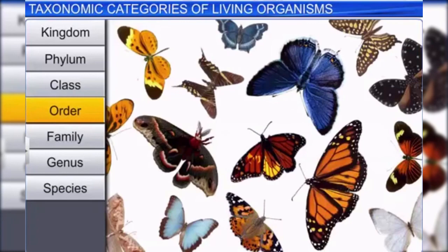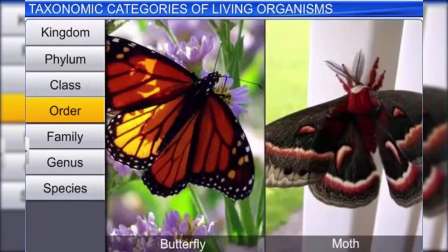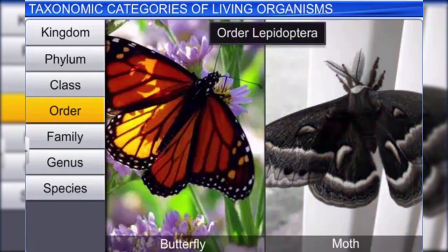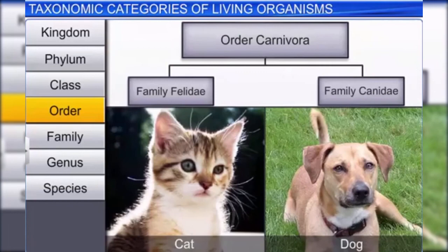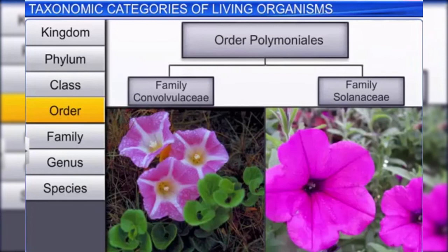Although a cat and a dog exhibit some similarities, they are separated into two different families: Felidae and Canidae respectively. Order is the next category, which is a collection of related families with fewer similarities than seen within a family. For example, order Lepidoptera includes butterflies and moths belonging to families Nymphalidae and Tineidae respectively. Families Felidae and Canidae are included in order Carnivora, and plant families Convolvulaceae and Solanaceae are included in order Polemoniales.